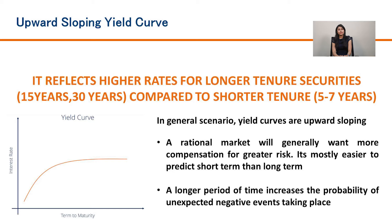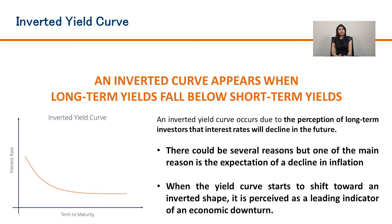The first type is the upward sloping yield curve. In this curve, the investor gets a higher interest rate for being invested for a longer period of time. This is an ideal and rational situation for an economy, wherein a higher tenure pays off a higher interest rate.